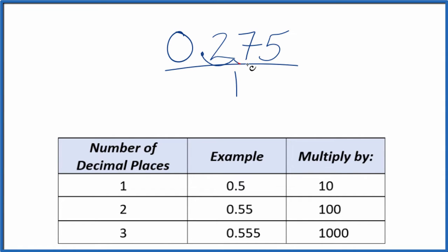I can see I have one, two, three decimal places. If I have three decimal places, I'm going to multiply the decimal here by 1,000.